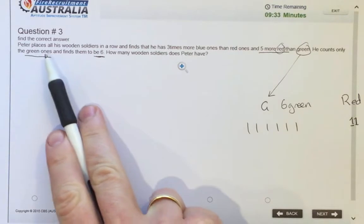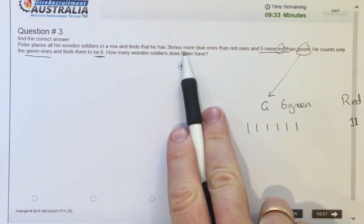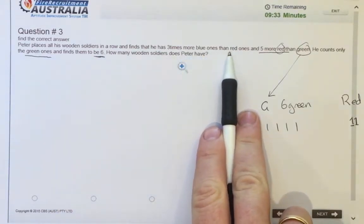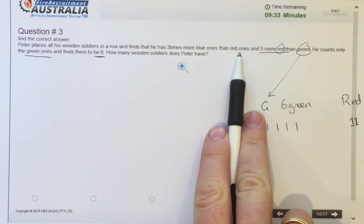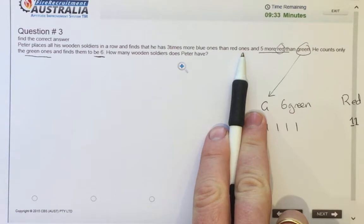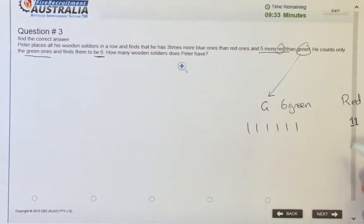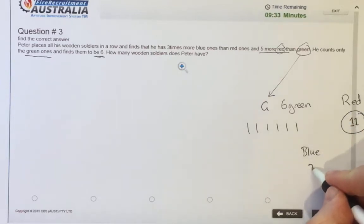And what's he got here? Peter places all the wooden soldiers in a row. Three times more blue ones than red ones. So three times more blue than red. So blue would be three times more than red. So red's 11. Three 11s is 33.